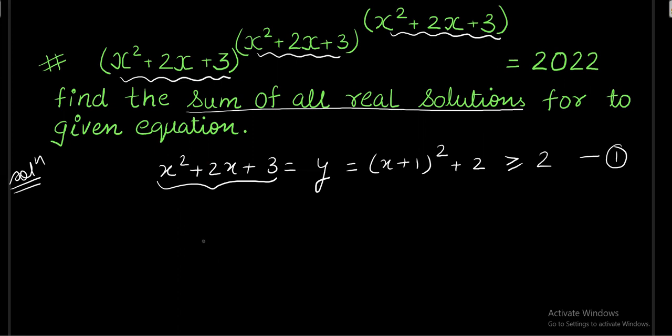Now let us rewrite the equation in terms of y. It becomes y to the y to the y equals 2022. Right, this is 2 times 1011 and obviously just after this factorization I know that by observation we cannot tell the value of y.